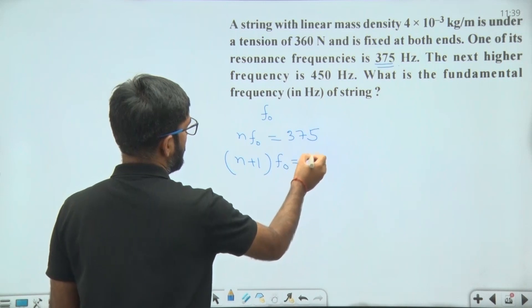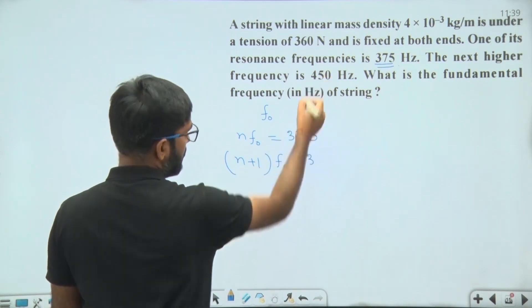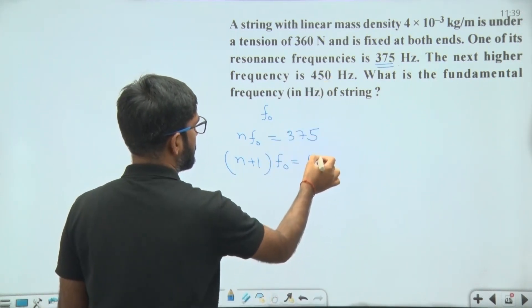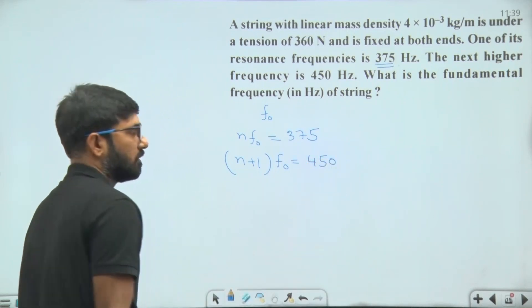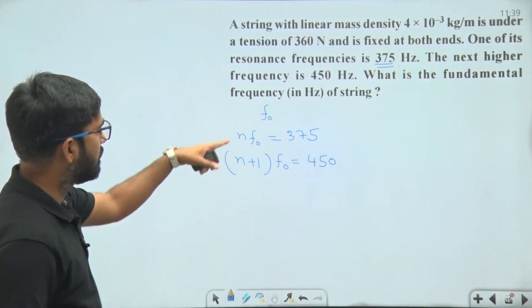Dividing the second equation by the first, we get (n+1)/n = 450/375.